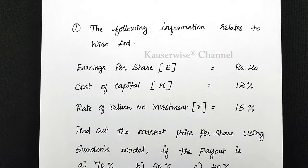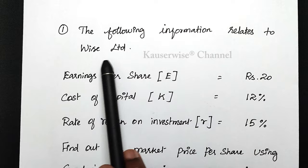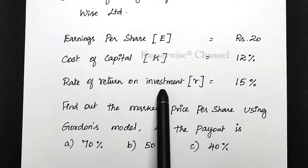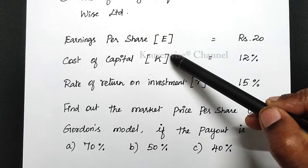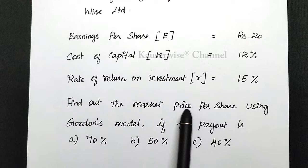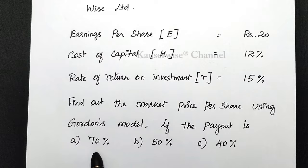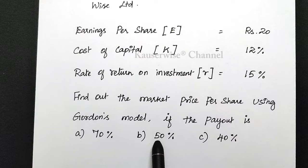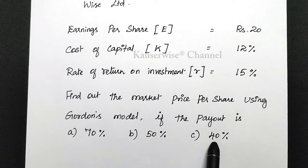Look at the problem. The following information relates to Weiss Limited: earnings per share (E) is rupees 20, cost of capital (K) is 12%, and rate of return on investment (R) is 15%. They are asking us to find the market price per share under Gordon's model when the payout ratio is 70%, 50%, and 40%. If payout is 70%, the remaining 30% is retention ratio. For 50% payout, the remaining 50% is retention ratio. For 40% payout, the remaining 60% is retention ratio.